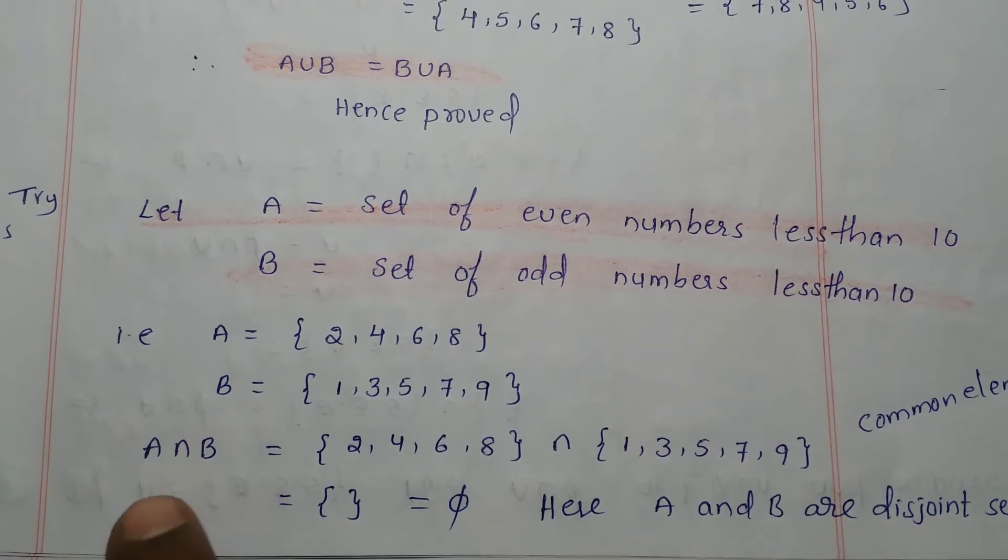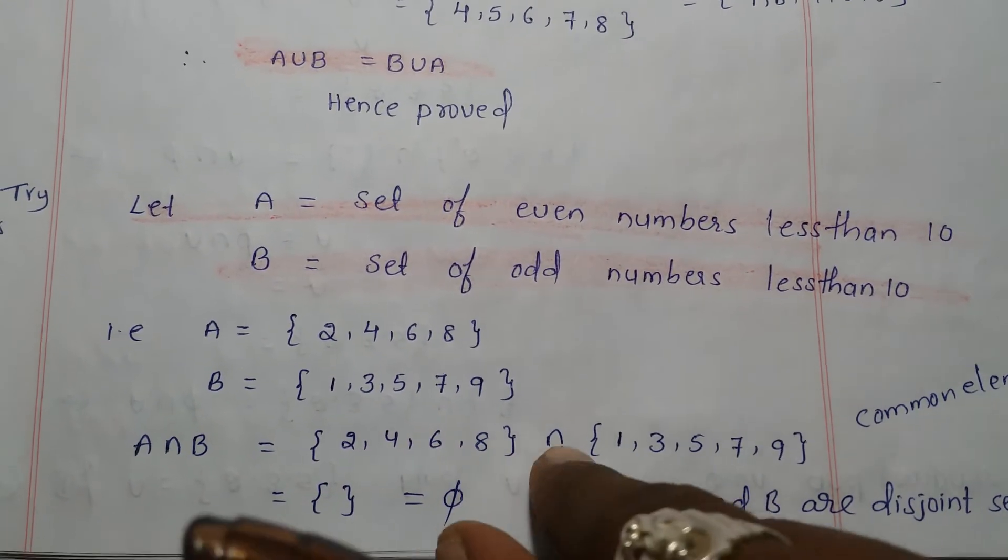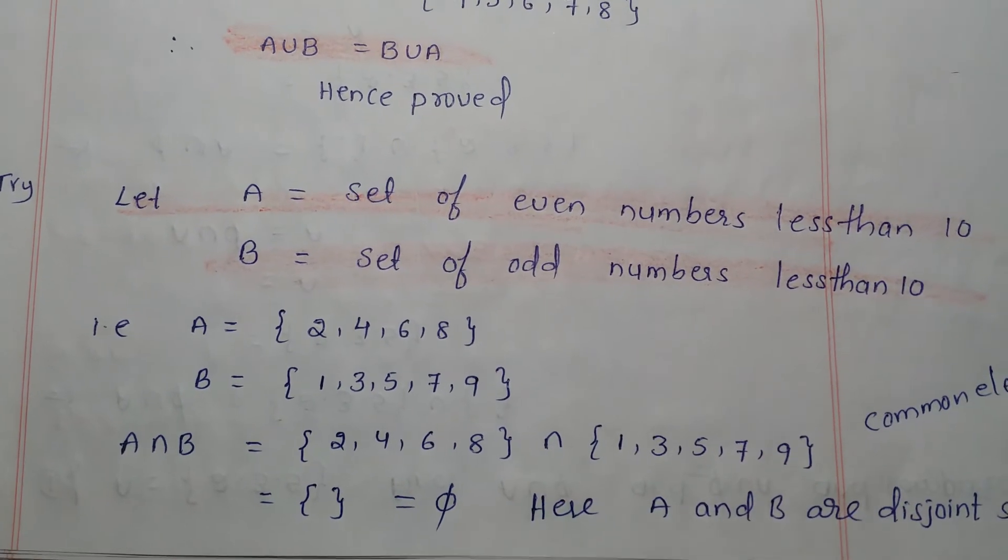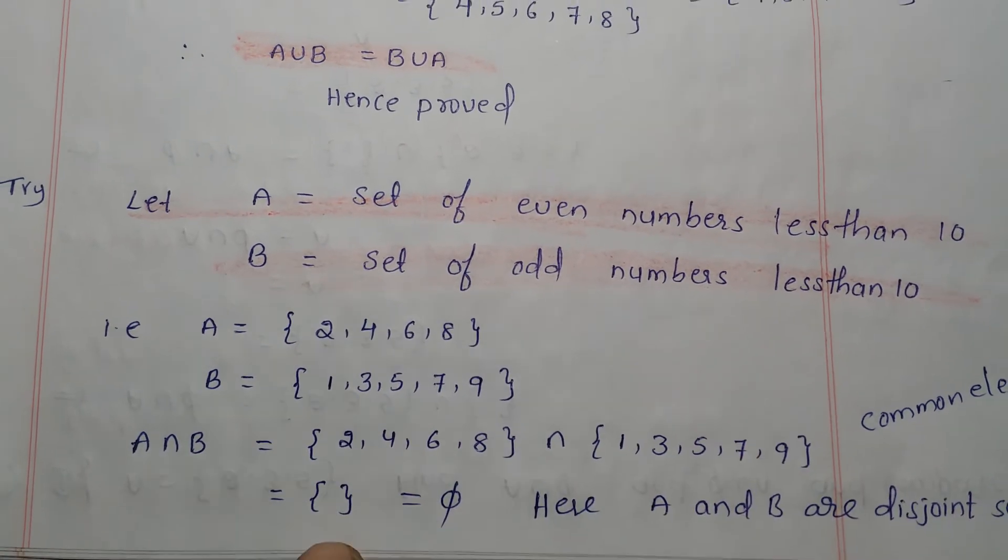We need to find A intersection B. That is {2, 4, 6, 8} intersection {1, 3, 5, 7, 9}. If you do the intersection, we get the null set.